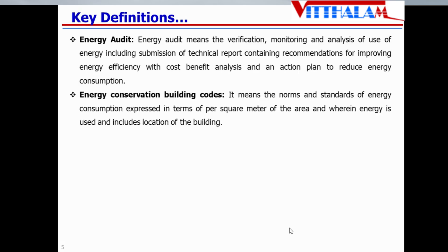ECBC, that is Energy Conservation Building Codes, is a set of norms. This was basically developed to deal with rapidly increasing energy consumption in commercial buildings. It means the norms and standards of energy consumption expressed in terms of per square meter of the area. The total energy consumption per built-up area is known as Energy Performance Index, EPI, considering the use of that building and the location of that building.